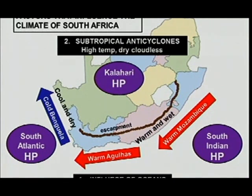The Kalahari high pressure is found in the interior, and obviously the South Atlantic and South Indian high pressures will be found in the oceans. Matric students, take note: there is no such thing as the Atlantic high pressure and the Indian high pressure. You are not going to get your mark if they ask you to identify the high pressure and it's in the Atlantic Ocean — the name is the South Atlantic high pressure. Please don't make a mistake and only say Atlantic high pressure. The same applies to the South Indian high pressure, not the Indian high pressure.